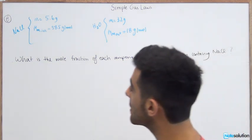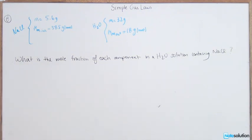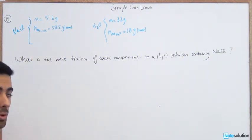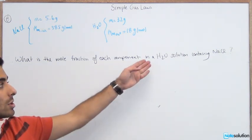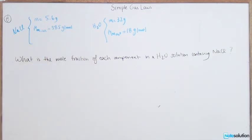In this case we have NaCl with a mass of 5.6 grams and molar mass of 58.5, and H2O with a mass of 32 grams and molar mass of 18 grams per mole. The question asks: what is the mole fraction of each component in a water solution containing NaCl?